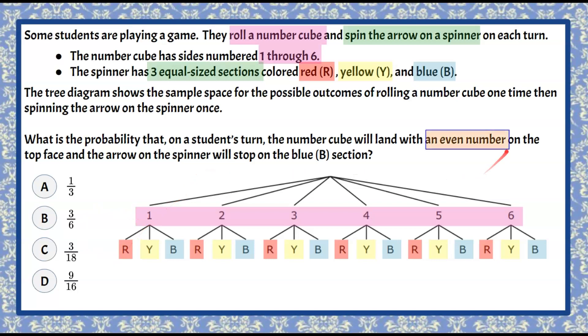Our question says we're going to get an even number and blue. So we're going to start in our tree diagram with our number cube. So two is even and there's one outcome of blue if you roll a two.